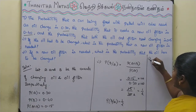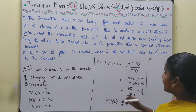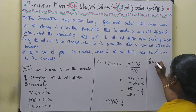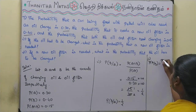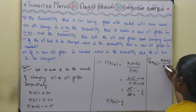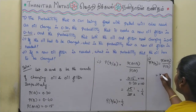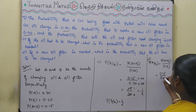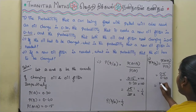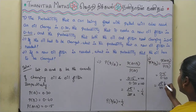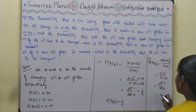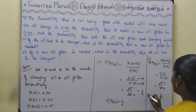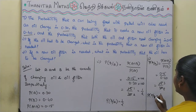The second question is P(A|B). Using the formula P(A|B) = P(A ∩ B) / P(B) = 0.15 / 0.40. Simplifying, 15 divided by 40 gives 3/8. So P(A|B) = 3/8. This is our required answer.